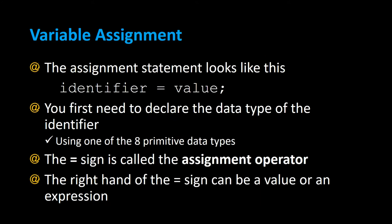Variable assignment is when you assign your variable to a value, and it looks something like this. You have the variable name, which is an identifier, and that's assigned to a value using the equal sign. The single equal sign is assignment in Java — it does not check for equality. To check for equality, you'll use two equal signs in a row.